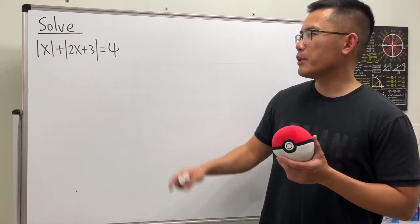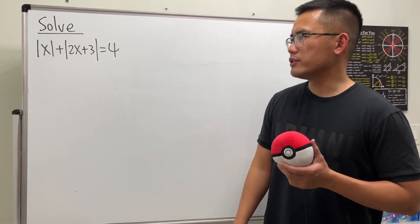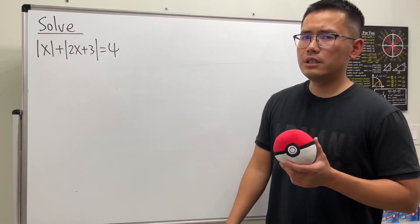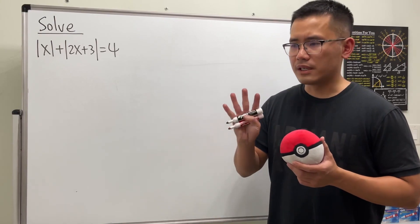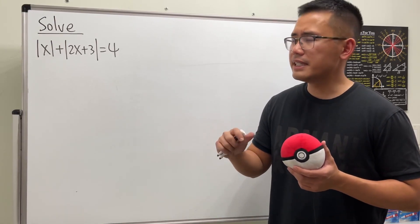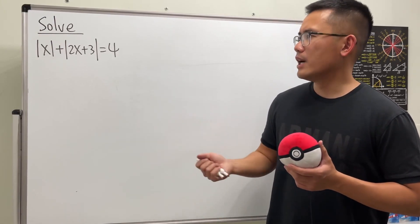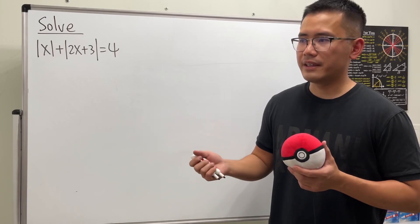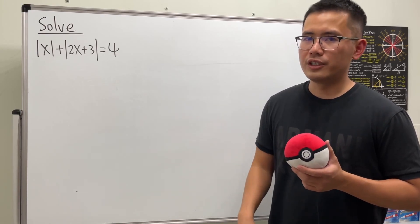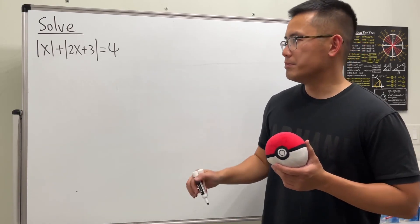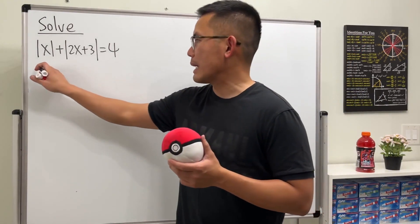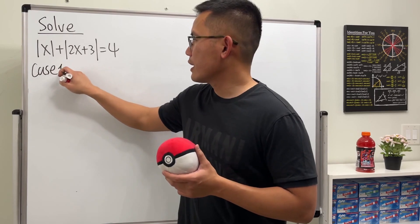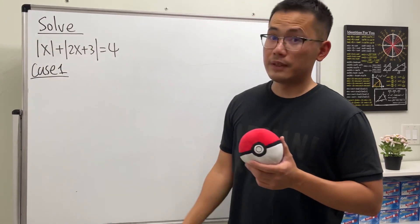Let's take a look at this double absolute value equation. This one is pretty tricky because we have to consider four cases. Two of the answers we get are fake and only two are legitimate, so make sure we double check. Here we go — Case 1: just take out the absolute values.